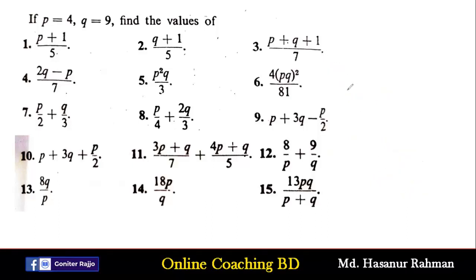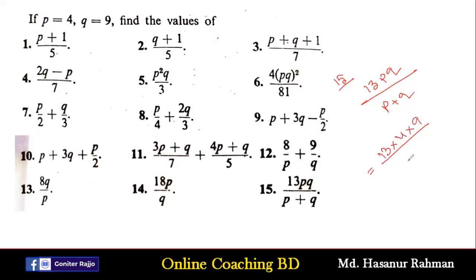Now our last problem, number 15, says 13pq/(p+q). The value of p is 4 and the value of q is 9, divided by p plus q which is 4 plus 9, that is 13. So 13 multiplied by 4 multiplied by 9 divided by 13 — we cancel 13 by 13, and 4 multiplied by 9 equals 36. That is the solution of number 15.